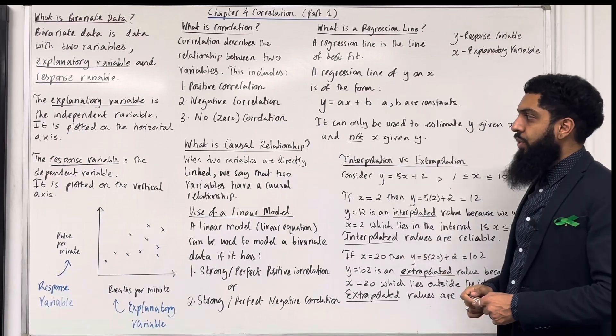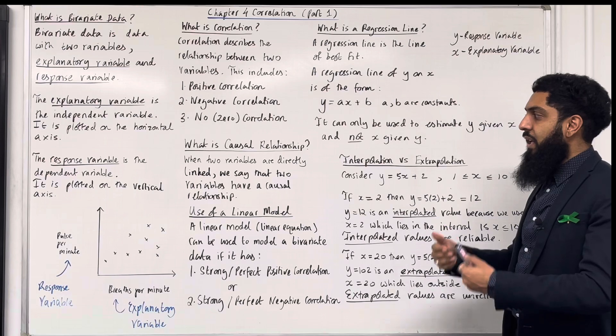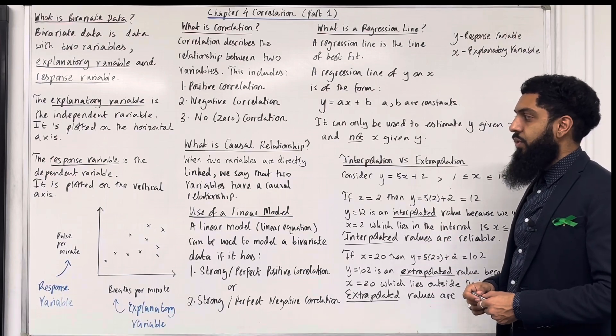What is causal relationship? When two variables are directly linked, we say that the two variables have a causal relationship.